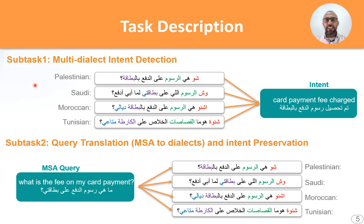Let's take these figures as an illustration. In subtask 1, the first figure at the top, we can see that there are four queries in different dialects that match one intent: 'is tamma tachsil rsoum al-daf'a al-baataqa,' or the corresponding translation 'car payment fee chart.' However, the participant will not know which dialect each query belongs to, which makes the task more complicated and challenging.